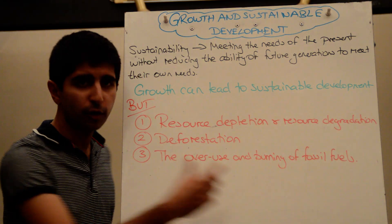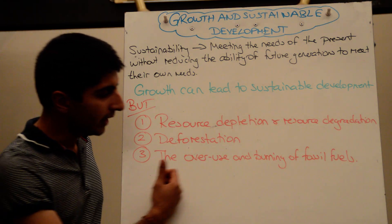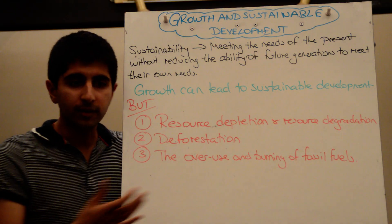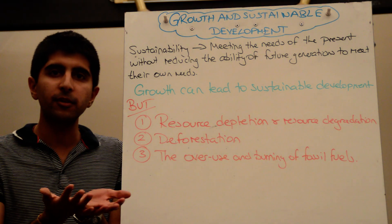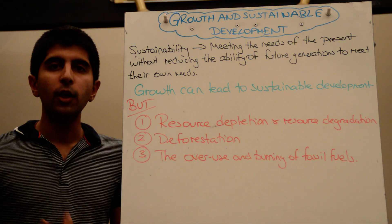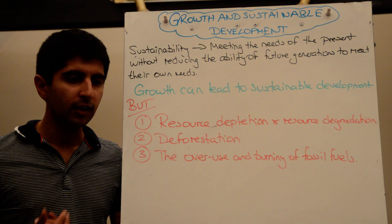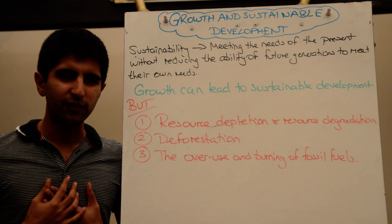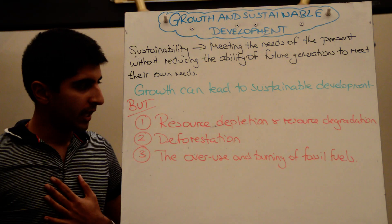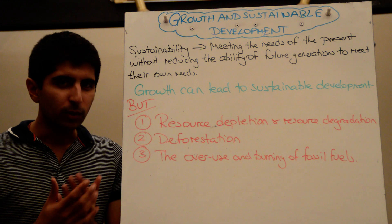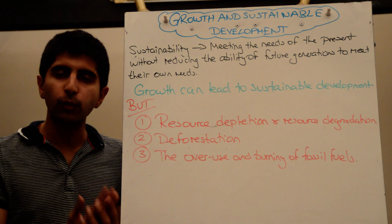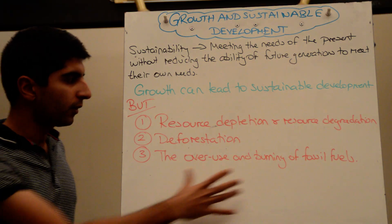Another way growth can be unsustainable is the overuse and burning of fossil fuels. This produces pollution, carbon monoxide, and carbon dioxide in the atmosphere, which harms third parties and can cause negative health effects for both current and future generations. It can also lead to a lack of productivity in the economy and a loss of welfare in society.